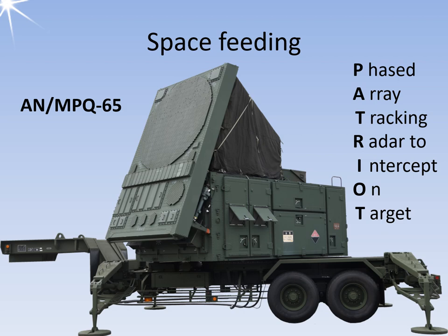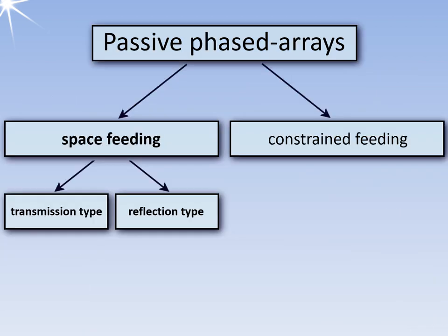In the Patriot, the primary radiator is located behind the antenna array under the tarpaulin. The AN/MPQ-65 Patriot is therefore a transmission type. This has the advantage that the primary radiator and its mount do not cast any shadows on the phased array.